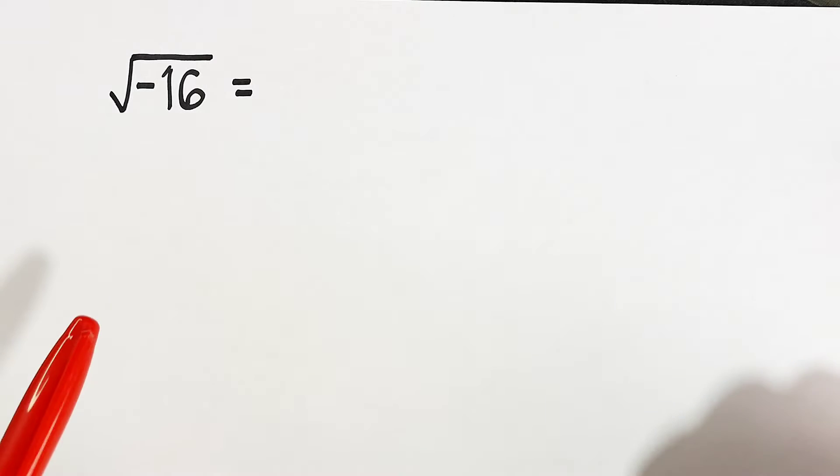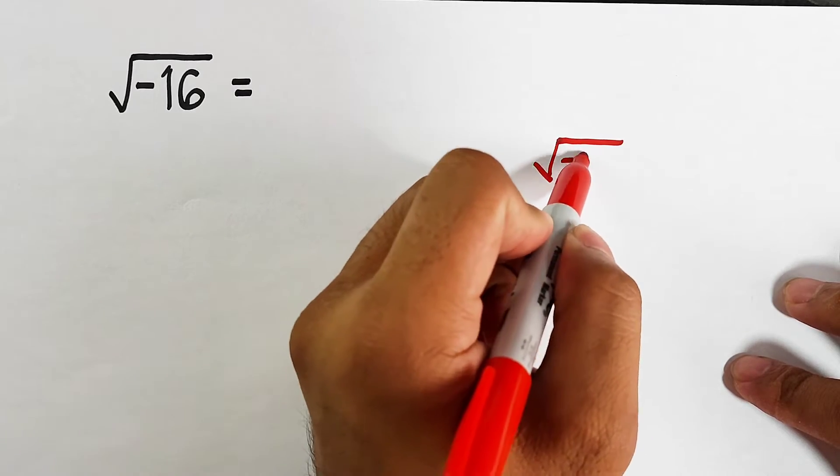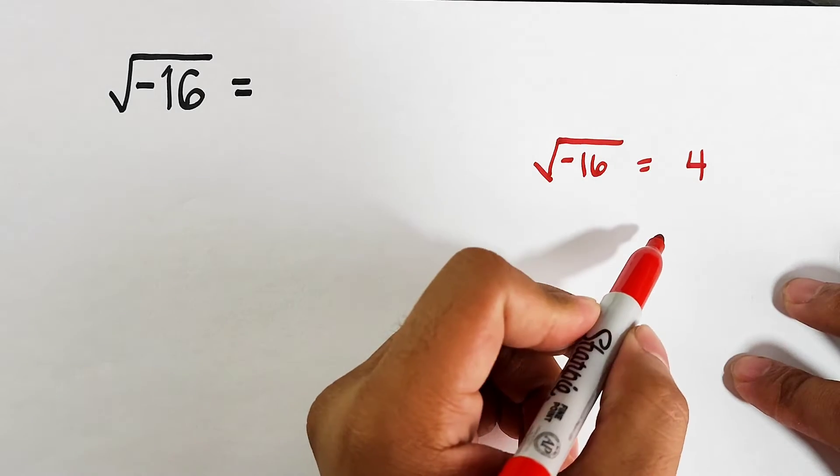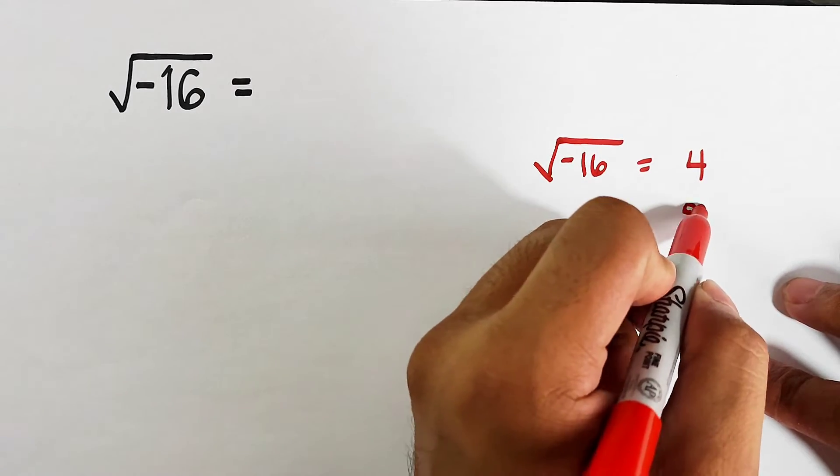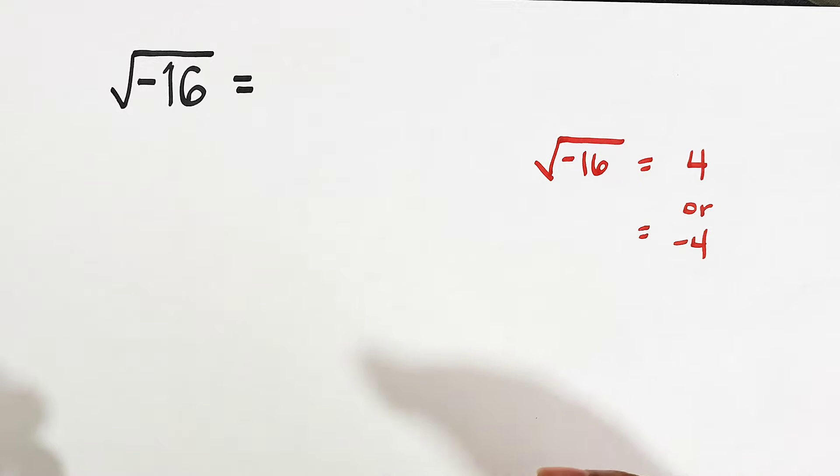So what we have here is that we need to find the square root of negative 16. Now, if you will answer me that the square root of negative 16 is equal to 4 or negative 4, let me tell you this straight. 4 and negative 4 are incorrect.